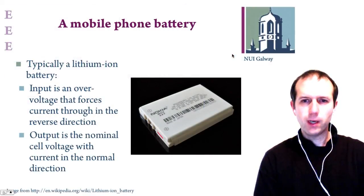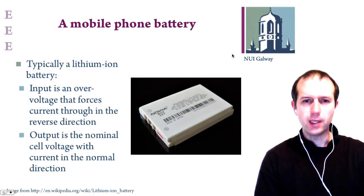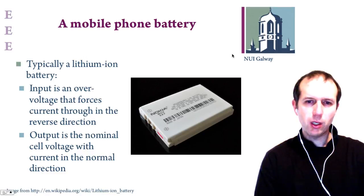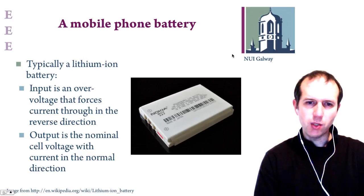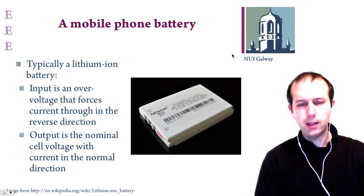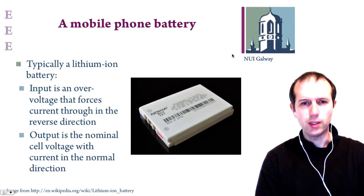So far we've been looking at mobile phones as our devices and the various subsystems within mobile phones. Today we'll have a quick look at a mobile phone battery. In the picture here you can see a typical battery. This is a 3.6 volt battery and typically the batteries in mobile phones tend to be lithium ion batteries.